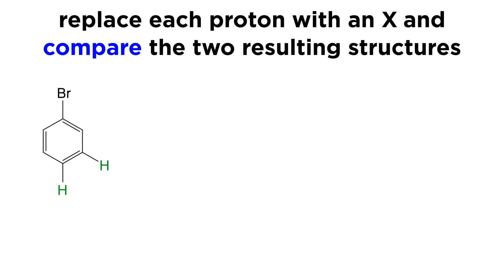The way we can test whether two protons are chemically equivalent or not is to replace one of them with an X to generate one structure and the other with an X to generate a second structure, and then see what the relationship is between the two resulting molecules. There are a few possibilities here.